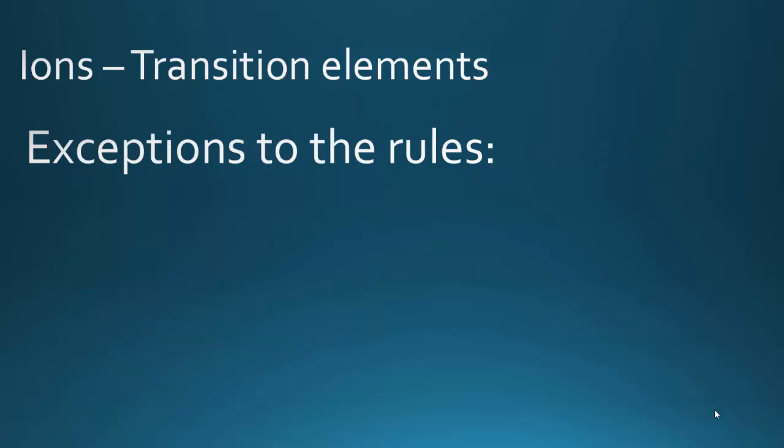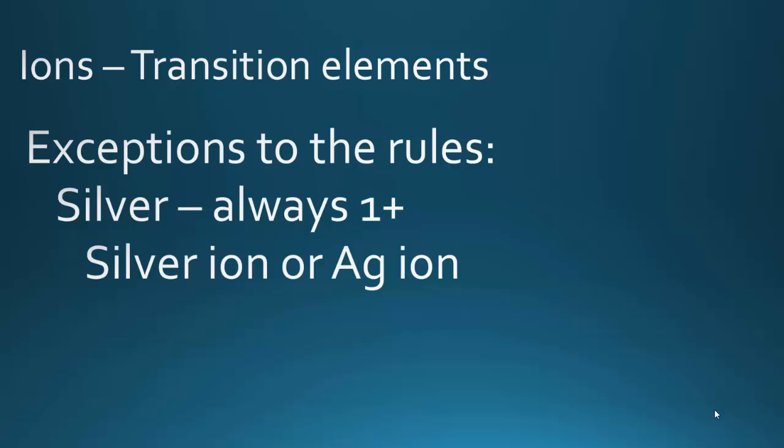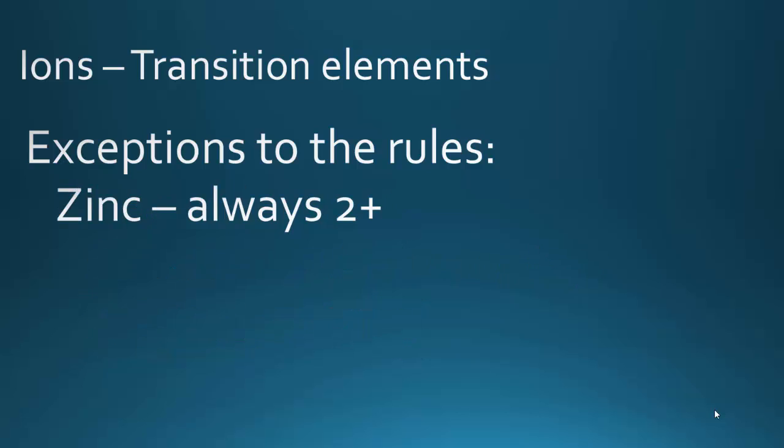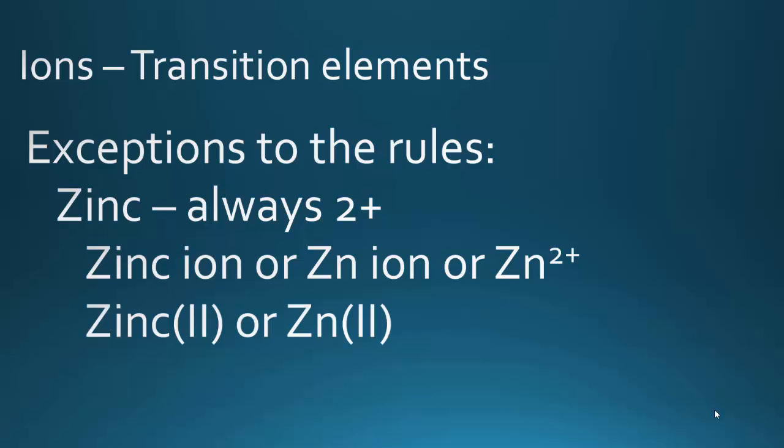Now there are some exceptions to the rules. Silver, always 1+. So you say you have the silver ion or the Ag ion, or you could write as Ag¹⁺. You never write it as silver with Roman numeral I or Ag Roman numeral I. Zinc is always 2+. So it's the zinc ion or the Zn ion or Zn²⁺.